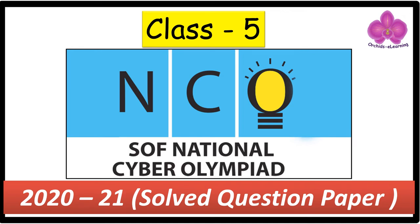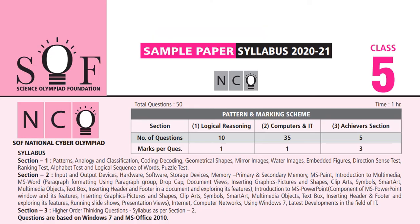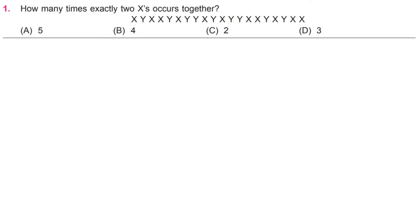National Cyber Olympiad NCO solved question paper for Class 5. Read all the options carefully, write your answers in the comment section below or in your notebook for better practice. How many times exactly two X's occurs together?